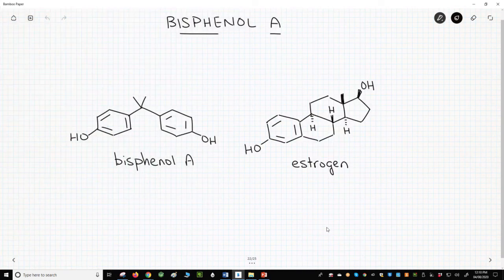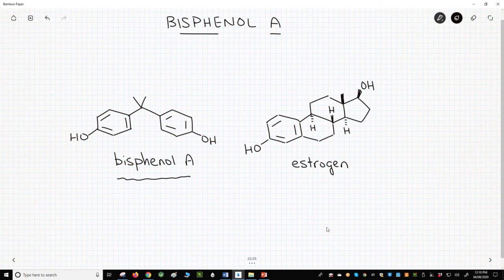On the screen are two molecules. One is bisphenol A, and the other is estrogen, which is a hormone. Bisphenol A can affect biological pathways in the same way as estrogen. If polycarbonate degrades and releases bisphenol A, organisms, including humans, show negative biological effects.